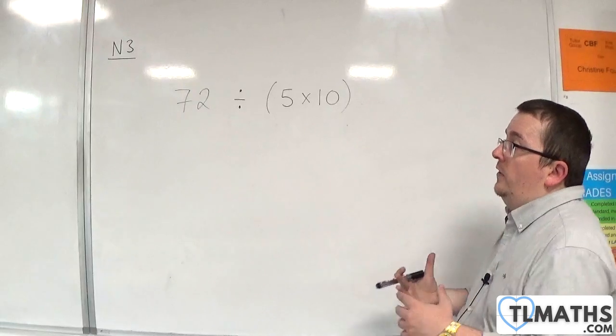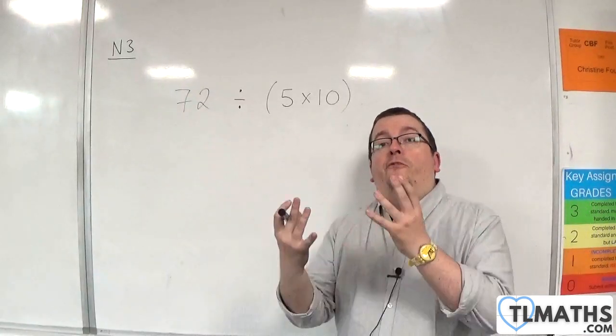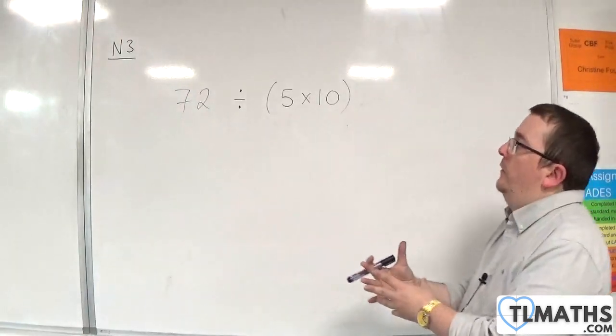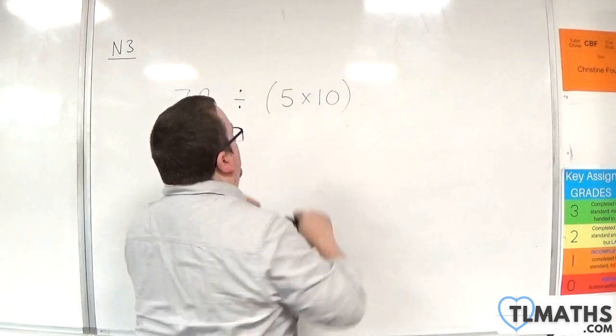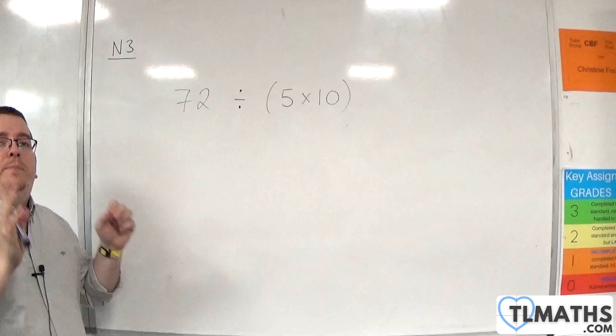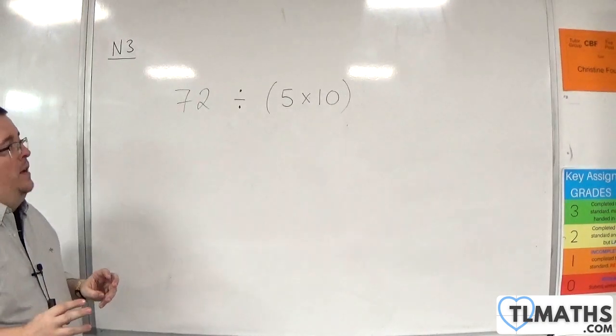Brackets are going to tell me I have to do this bit first. So, with the order of operations, this is telling me I have to do 5 times 10 first before I do anything else. Because otherwise, if the brackets weren't there,